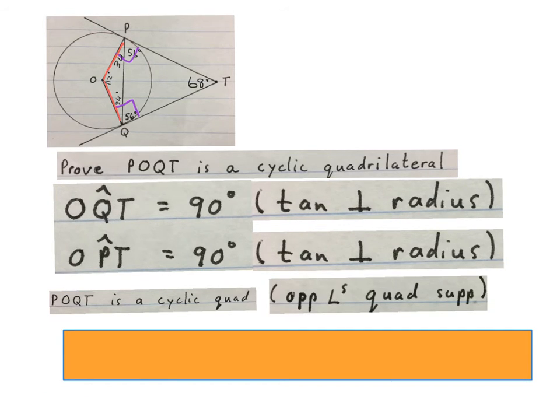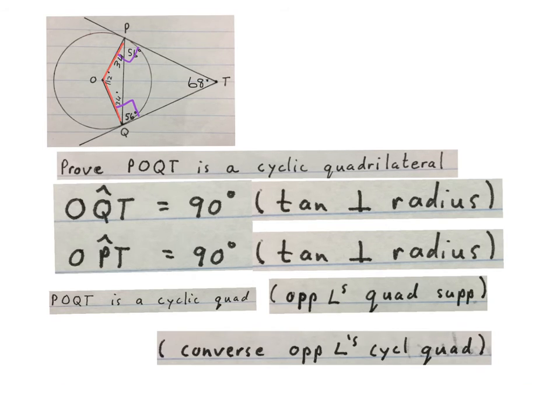We did it earlier already, but I'm still writing it now again. So there, OPT is also 90 degrees. Then you just conclude POQT is a cyclic quad. Why? Because here we have opposite angles of a quad that is supplementary. So that angle and that angle adds up to 180 degrees. Therefore, this is a cyclic quad. If you take this 112 and the 68, they will also add up to 180. You could have used that one too. This one is easier, I think.